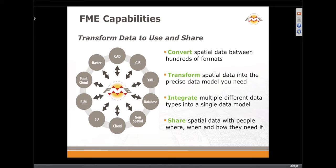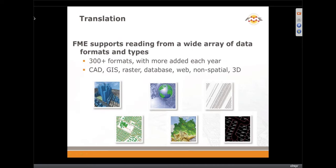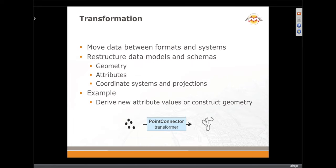CityGML has a very unique structure. In order to load that structure, integration is really key — being able to bring together CAD, GIS, other XML data, raster data, point cloud, pretty much all of these data sources all into 3D. It's a very rich data model. It certainly helps that FME supports more than 300 formats. There are a lot of tools for transformation — both the geometry and the attributes — because in this case, we take attribute information and feed it into the geometry in order to make the geometry model.